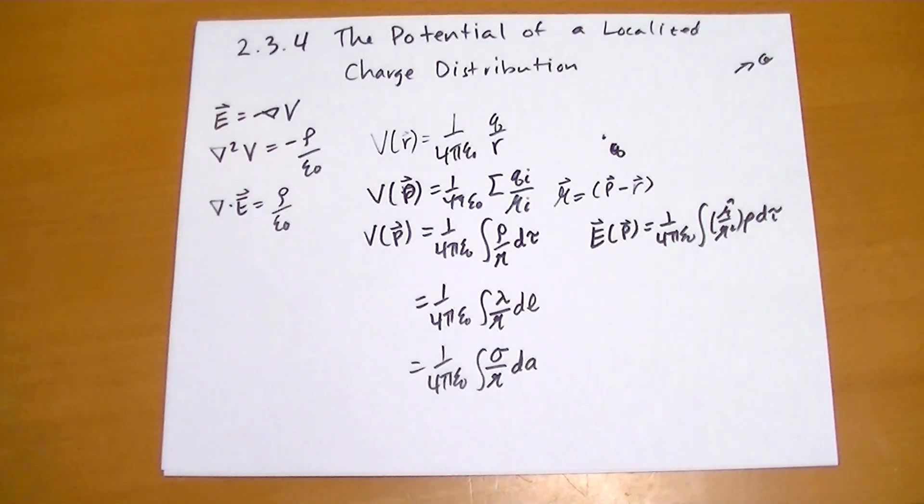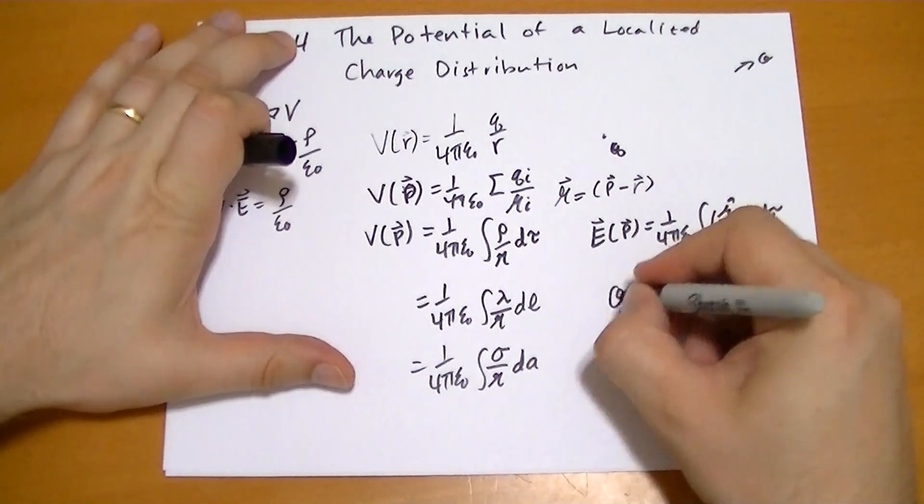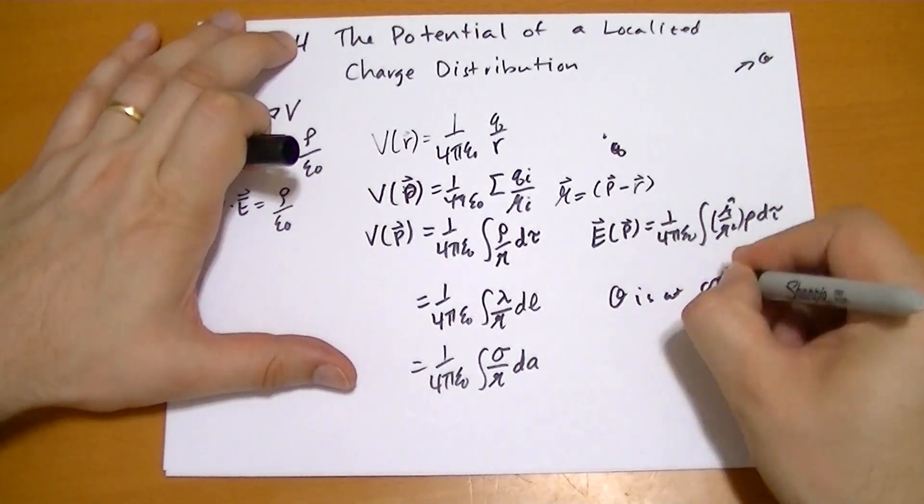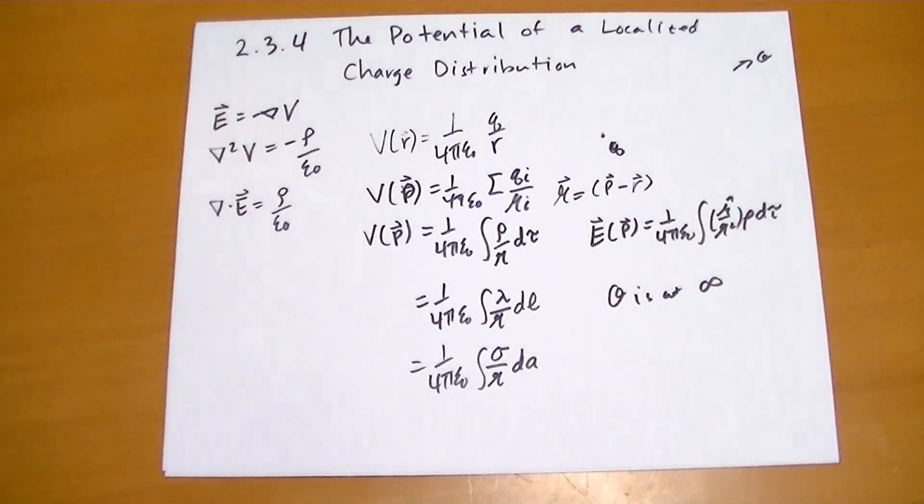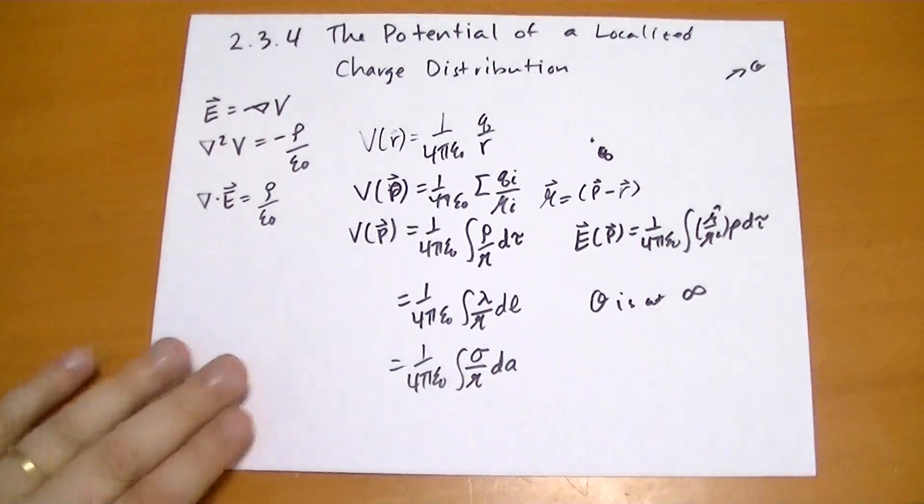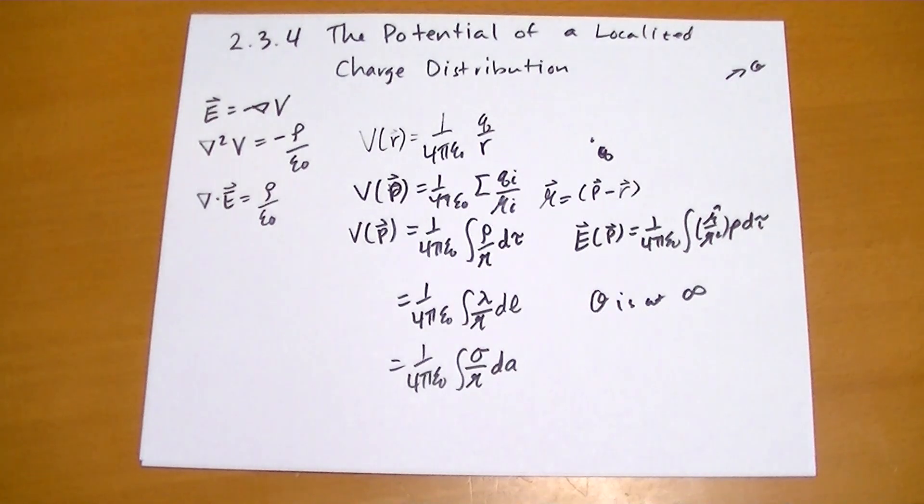And the warning, the real caution here is that O is at infinity. And if you have one of those weird textbook problems where you have a charge that extends out to infinity, then you can't really use these formulas. You have to re-derive them on your own for whatever situation you have. So remember that O has to be at infinity for these to work.